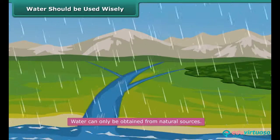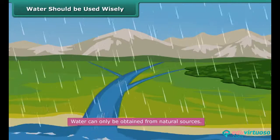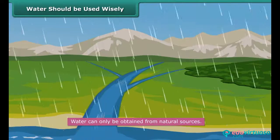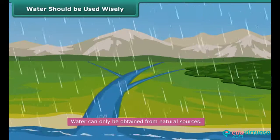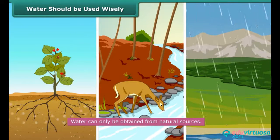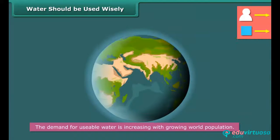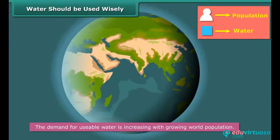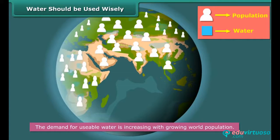A very small fraction of the total water available on Earth is fit for use by plants, animals, and humans. The demand for usable water is increasing with rising population. As a result, the shortage of water is acute in various parts of the world. The scarcity is only likely to worsen in the coming years, so we as responsible inhabitants of mother Earth must conserve water and use it judiciously.